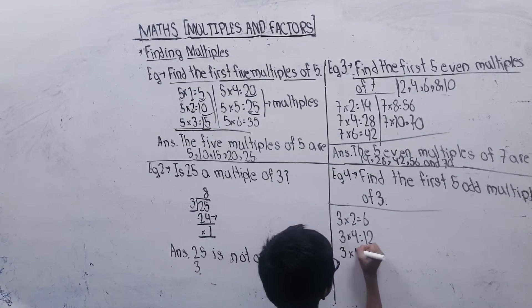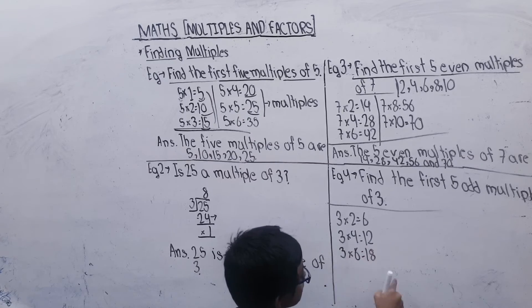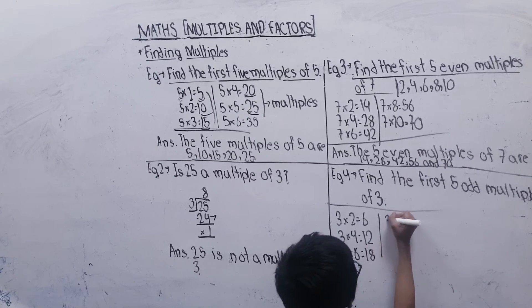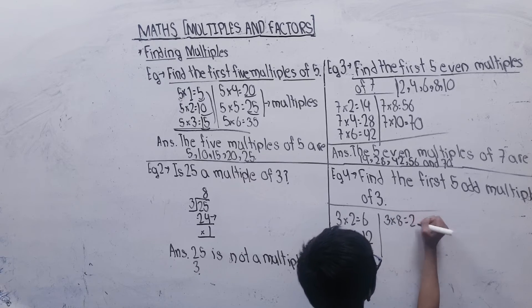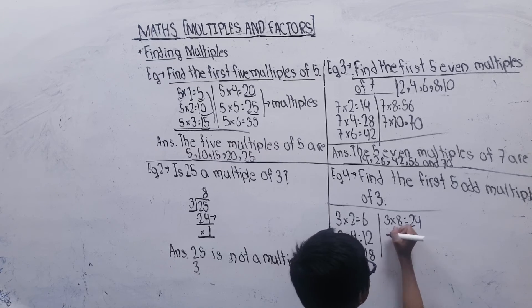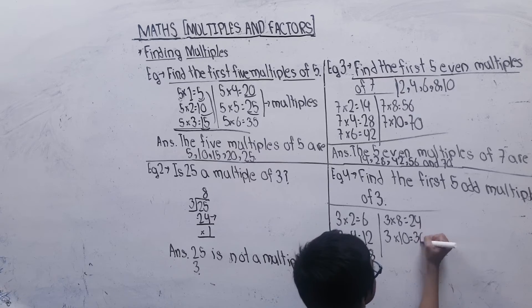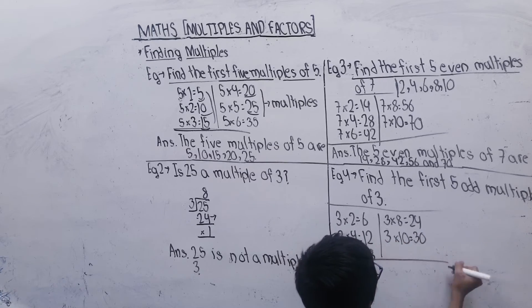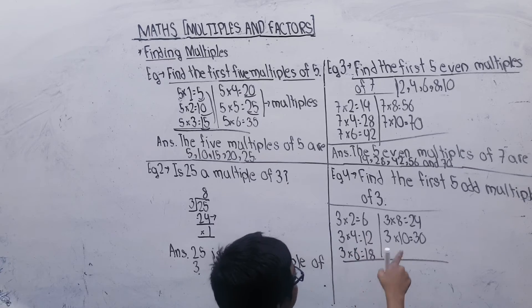3×6 is 18, then 3×7 is 21, 3×8 is 24, then 3×9 is 27, 3×10 is 30. So the 5 odd multiples of 3 are 6, 12, 18, 24, and 30.